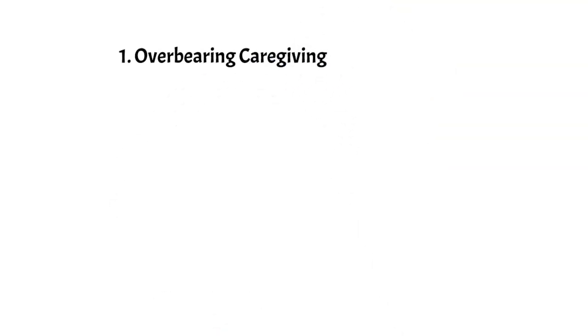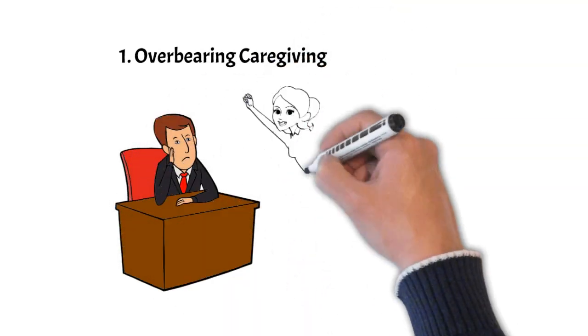Number one, overbearing care. Type 2s might give unsolicited advice or help, which can feel smothering or intrusive to some.